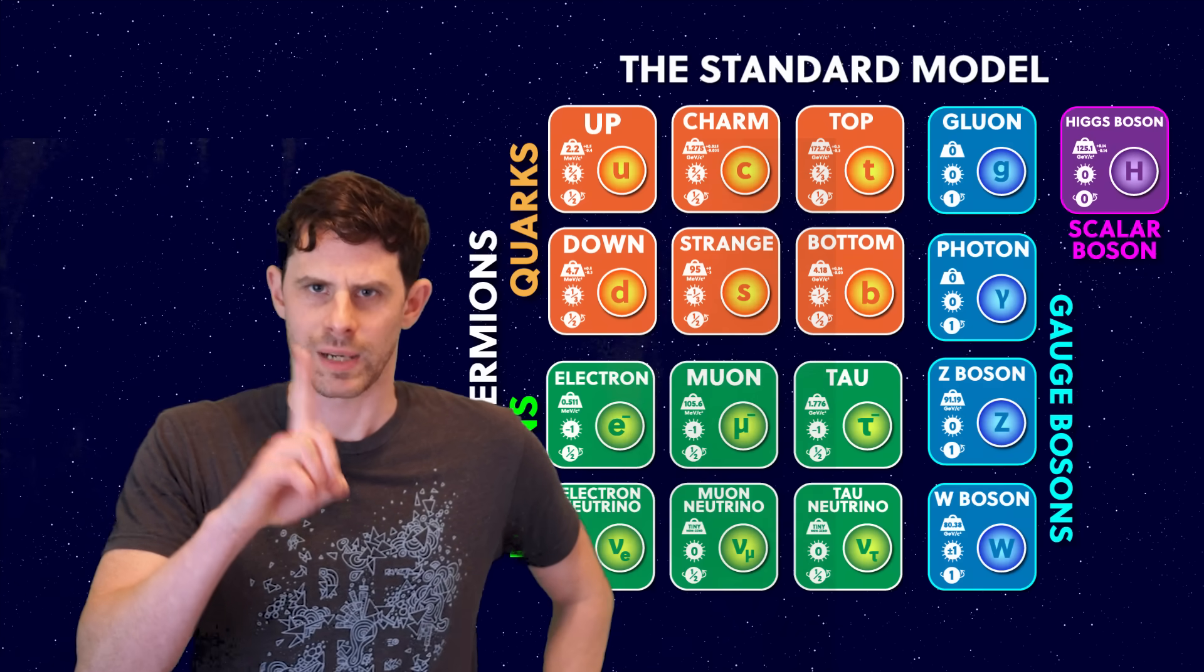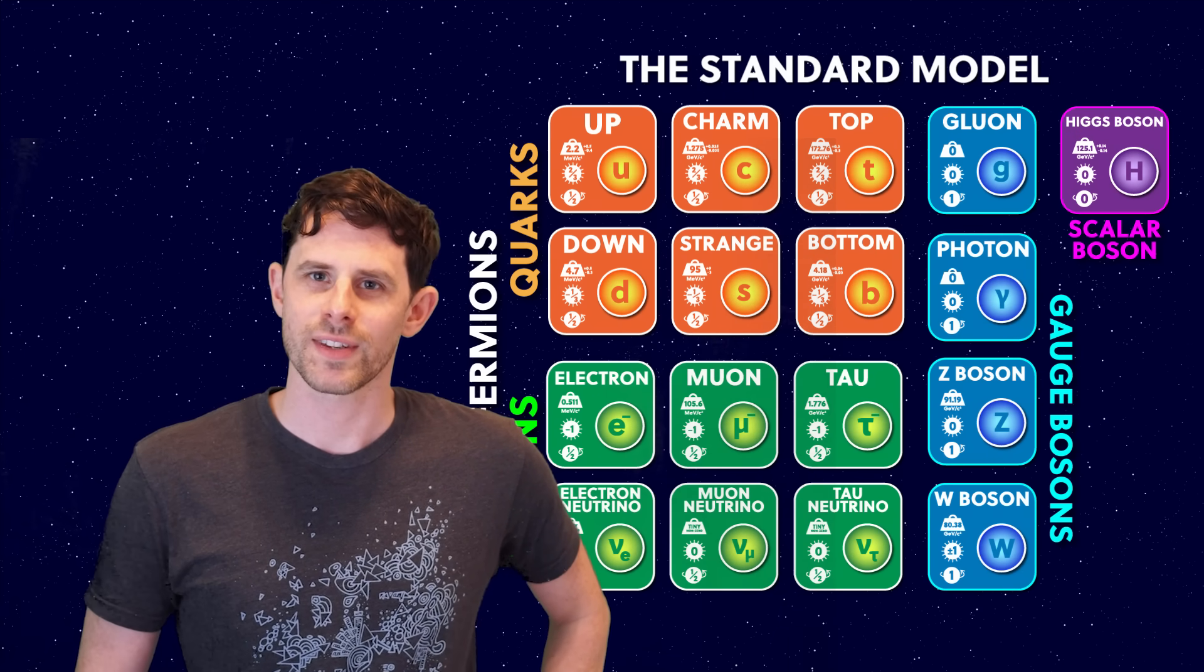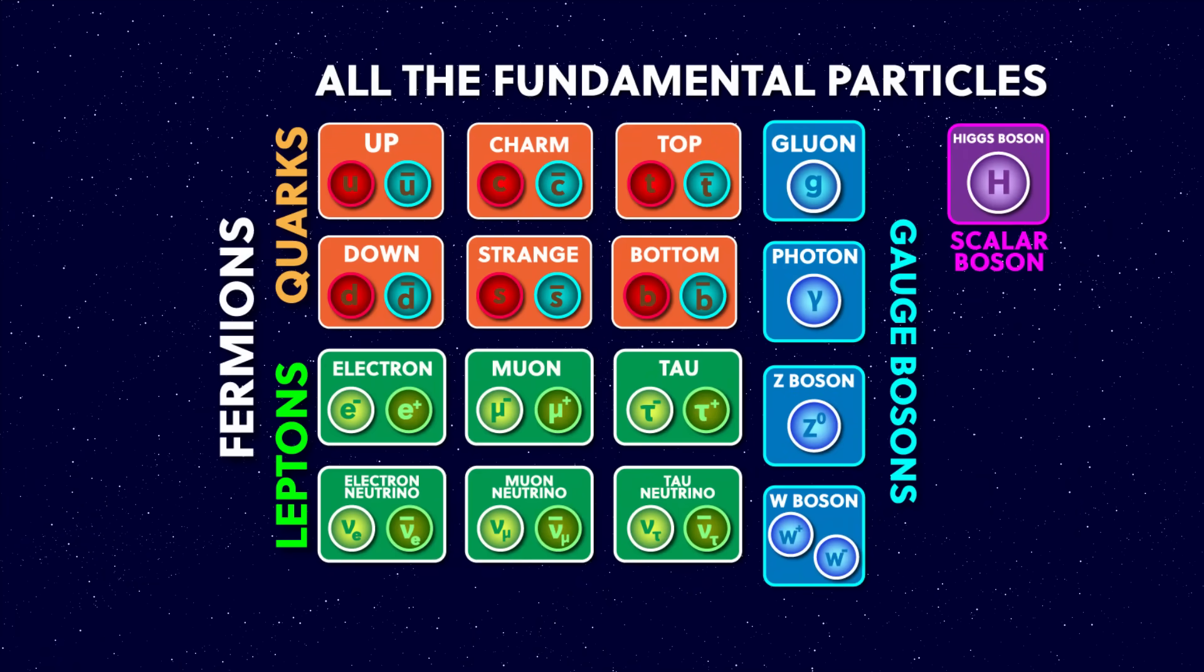But where, on my little picture, are the antimatter particles? Well, nobody ever bothers to draw them on the standard model. So I've done it here. Here they all are. There are antimatter copies of all of these particles, which have the same mass as the matter versions, but opposite everything else.